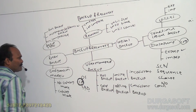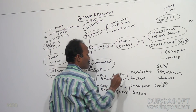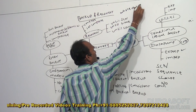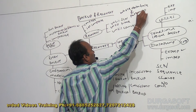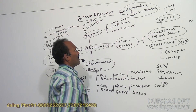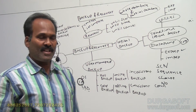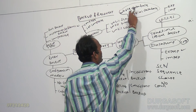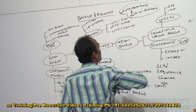One more important thing to explain is whole database backup versus partial database backup. Whole database backup includes control files, redo log files, and data files. Partial database backup may exclude either redo log files or control files. That is the difference between whole database backup and partial database backup.